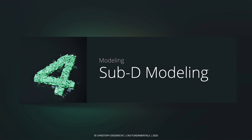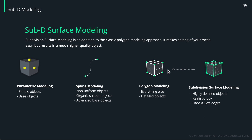Subdivision surface modeling is basically an addition to the default classic polygon modeling we learned in an earlier session. It allows you to make even more detailed, highly realistic looking objects. The functionality of subdivision surface modeling is simple to understand but not quite easy to master and use in everyday life. Like learning to draw or learning to play an instrument, you have to keep practicing — there are some pitfalls and a learning curve involved.